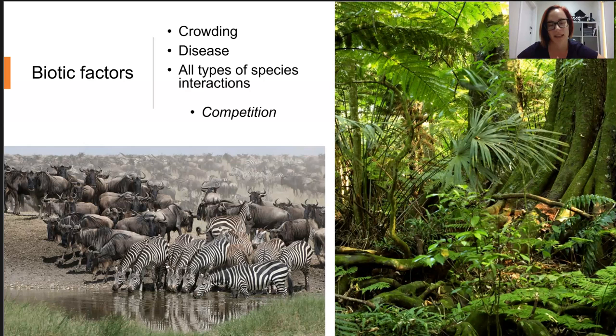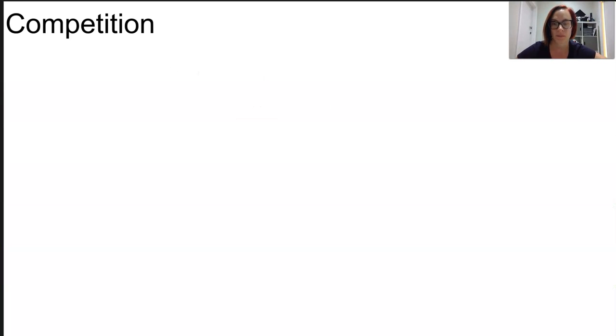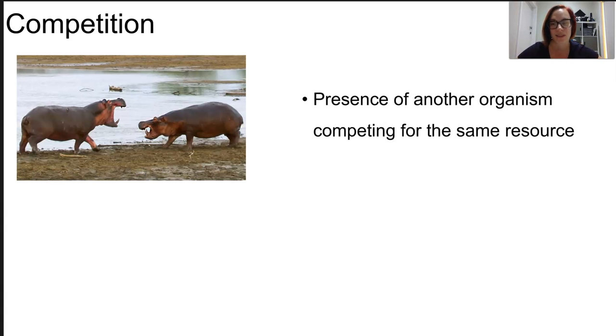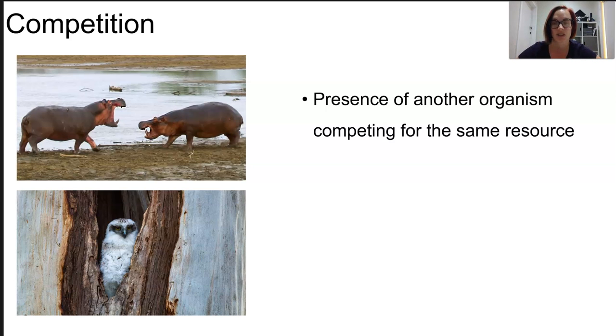So a significant impacting force on abundance and distribution is competition. Now competition is the presence of another organism competing for the same resource. Now when I say resources it might be food, it might also mean water or nutrients in the soil if you're a plant, space to grow in, a nesting site, shelter, whatever.